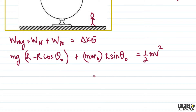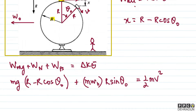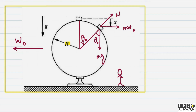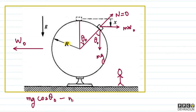Now we apply a second equation — the force equation. When the angle becomes theta0 and the body is about to break off, we set normal force N = 0. The centripetal force equation gives: mg·cos(theta0) minus m·w0·sin(theta0) equals mv²/R. So: g·cos(theta0) − w0·sin(theta0) = v²/R.